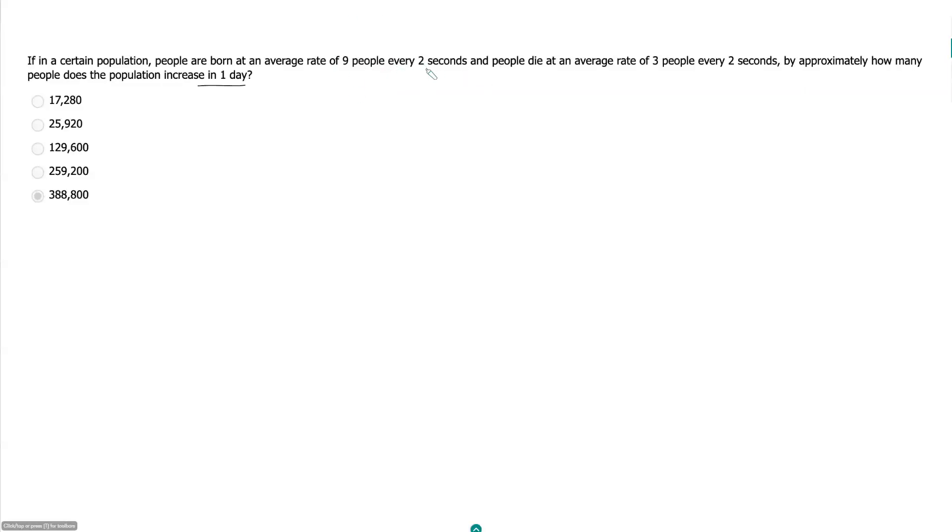So if we got nine people being born every two seconds, but then we also have three people that are dying every two seconds, after two seconds have passed, what does that mean? Net, we have added six people to our population. We can think of our growth rate as just our birth rate minus our death rate. So if our birth rate is nine people per two seconds minus our death rate which is three people per two seconds, then our growth rate is really six people every two seconds.